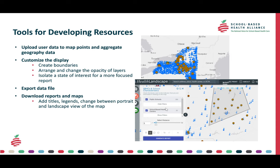A brief overview of the tools for developing resources that the mapping tool includes: users can upload their data to map points and aggregate geography data. They can customize the display by creating boundaries, arranging and changing the layer's opacity, and isolate a state of interest for more of a focused report. The data files can be exported and downloaded, and users can customize them by adding titles, legends, and changing between portrait and landscape view of the map.